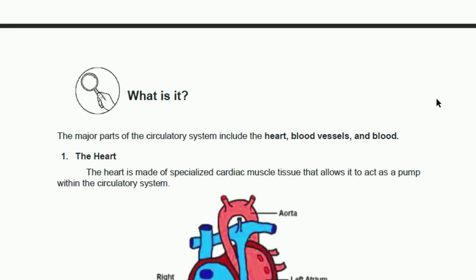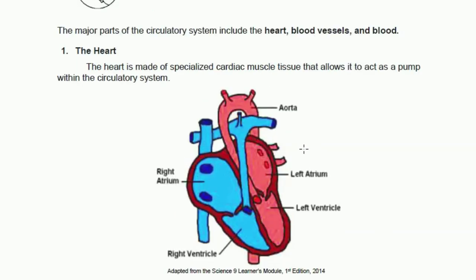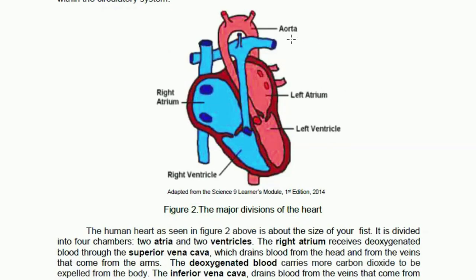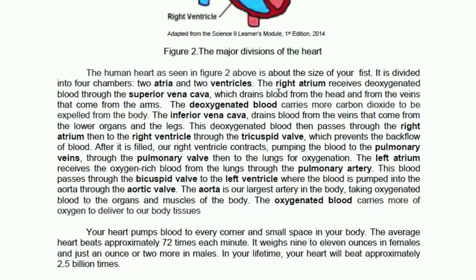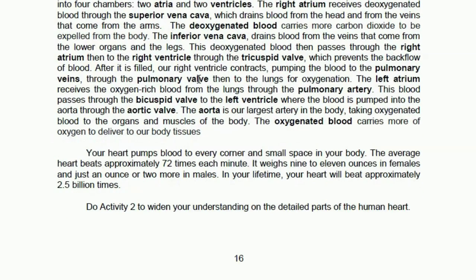After answering Activity 1, the crossword puzzle, you will continue reading page 16. On page 16 you will find the major parts of the circulatory system: the heart, blood vessels, and the blood. Here is the heart and the parts of the heart. The heart is made of specialized cardiac muscle tissue that allows it to act as a pump within the circulatory system. The different parts of the heart include the aorta, the left atrium, the right atrium, the left ventricle, and the right ventricle.